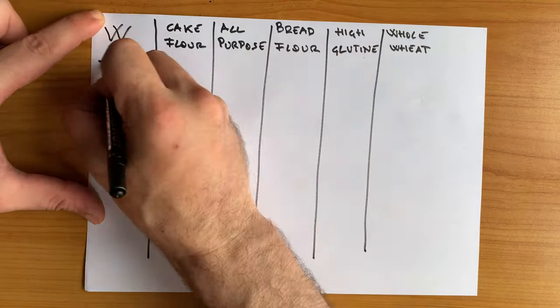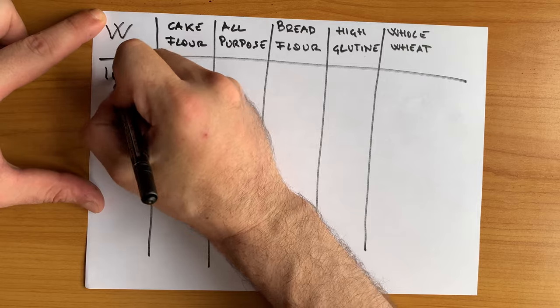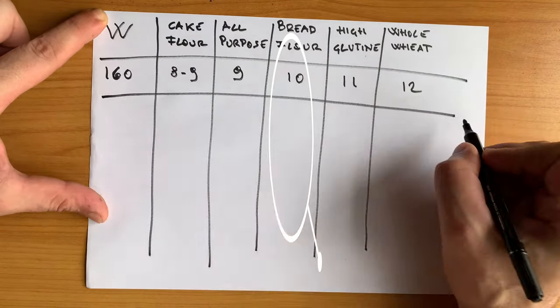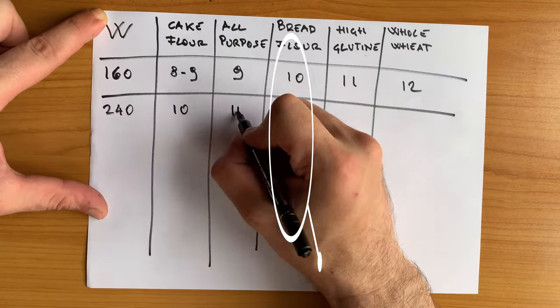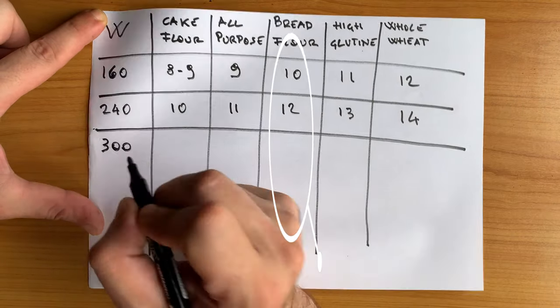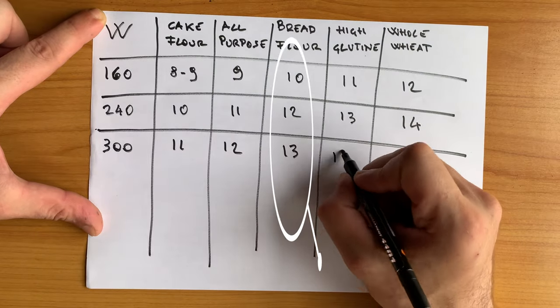So for example, if you have a bread flour with 10% of protein, which means that you will have a not very strong flour with only 160 W. Instead, if you have a bread flour with 13% of protein, you will have a strong flour with 300 W.